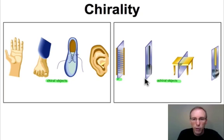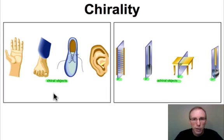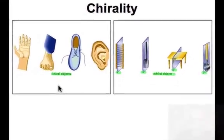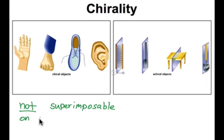You'll notice that the achiral objects all have a mirror-plane relationship that divides the left half and the right half of the molecule into two equal parts. Compare that to the objects on the left-hand side — none of these are able to be divided into two equal halves by such a mirror plane. Strictly speaking, the definition of a chiral object is an object that's not superimposable on its mirror image.